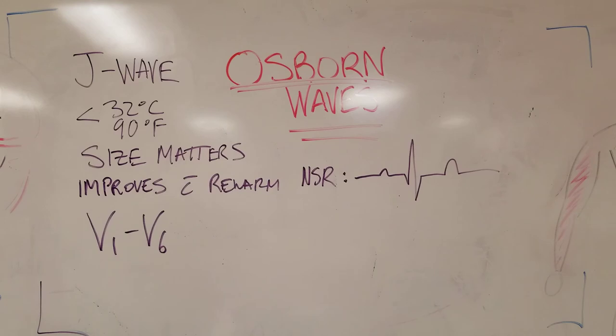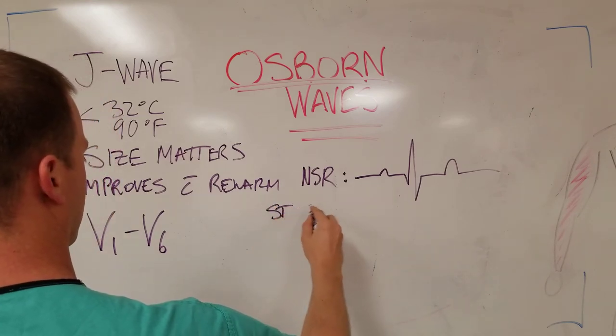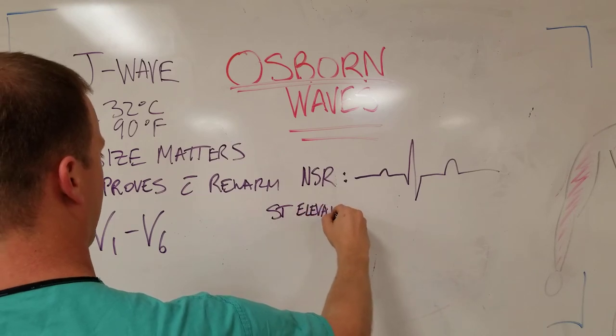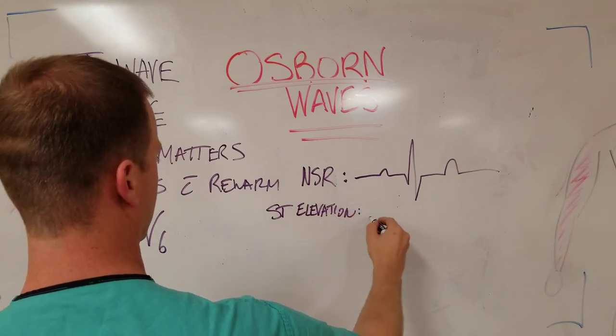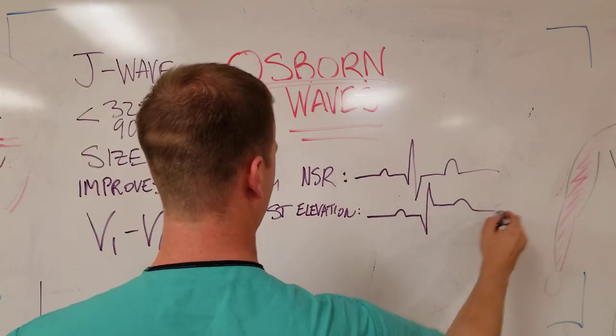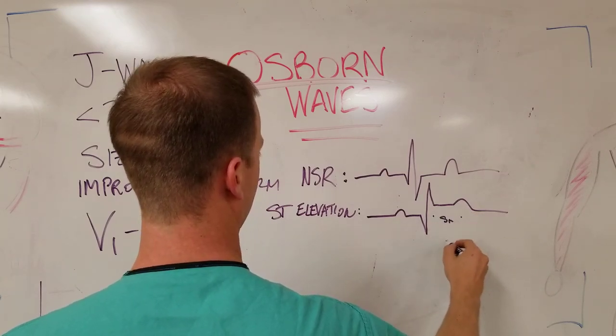Now this phenomenon is often mixed up with something called ST elevation that can be seen in myocardial infarction and ischemia leading to heart muscle death. What this looks like is P, Q, R, S, T. This is that ST segment and it's elevated.